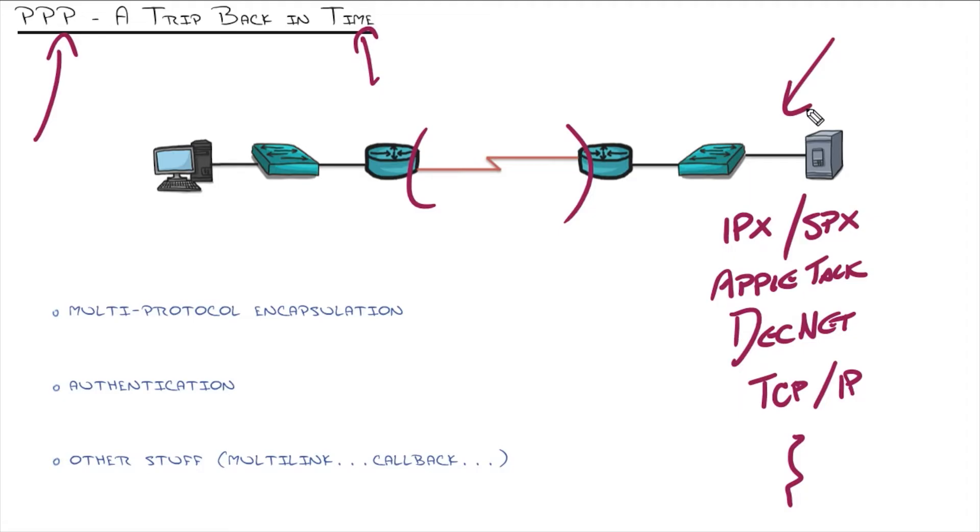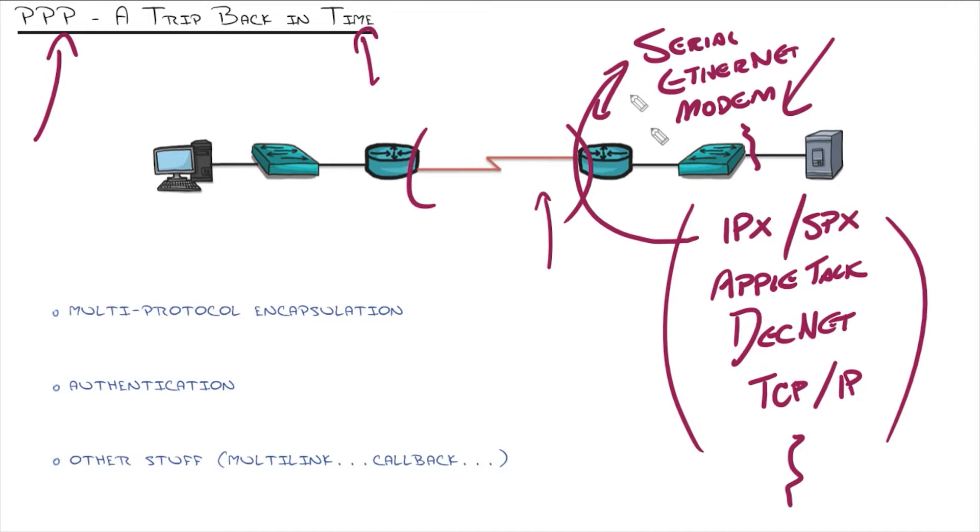But there was a problem. We needed all of these different protocols to work over different types of connections. And back then, that meant we would have to adapt those protocols to be able to communicate through those different styles. So, for example, we would have serial connections, Ethernet connections, modem connections, and so on and so forth. We would have had to have an IPX-SPX for serial, an IPX-SPX for Ethernet, a TCP/IP that works just with modems. It would be crazy, right?